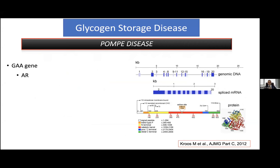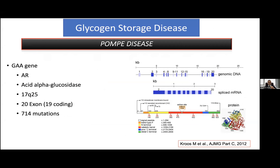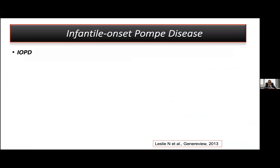The last disease is Pompe disease. It is also an autosomal recessively inherited lysosomal storage disease. The responsible gene is GAA. There are 19 coding exons and 20 total exons. More than 700 different mutations have been described. We have two clinical subtypes: infantile onset Pompe disease and late onset Pompe disease. Infantile onset Pompe disease is indeed a genetic emergency — we must give the genetic result in days.